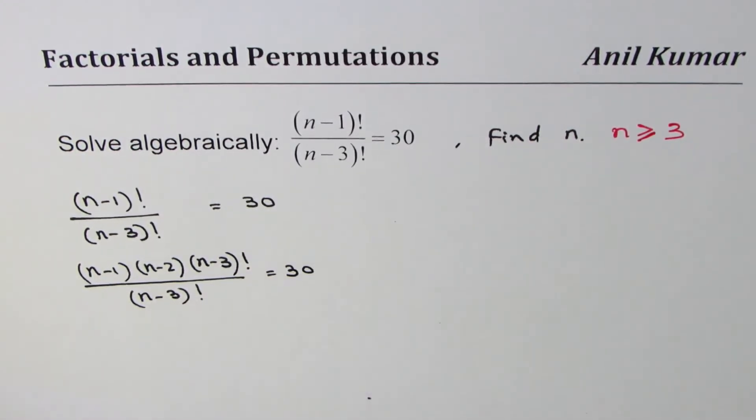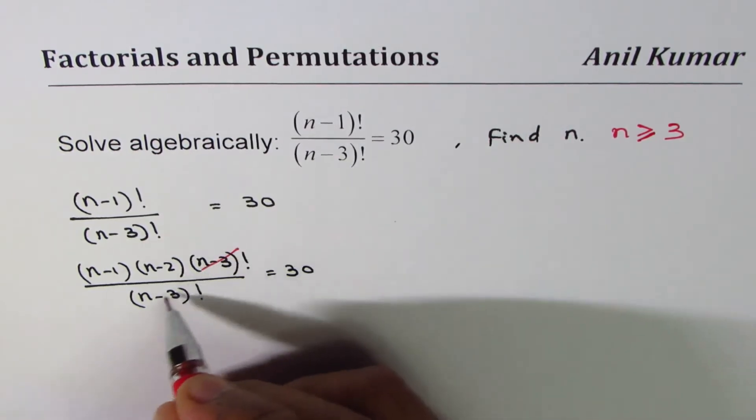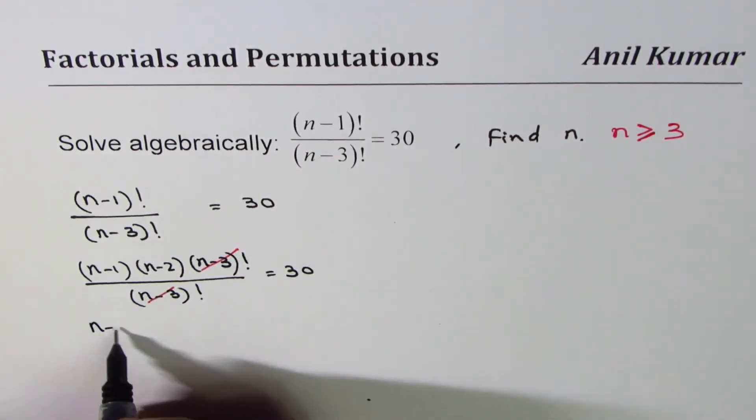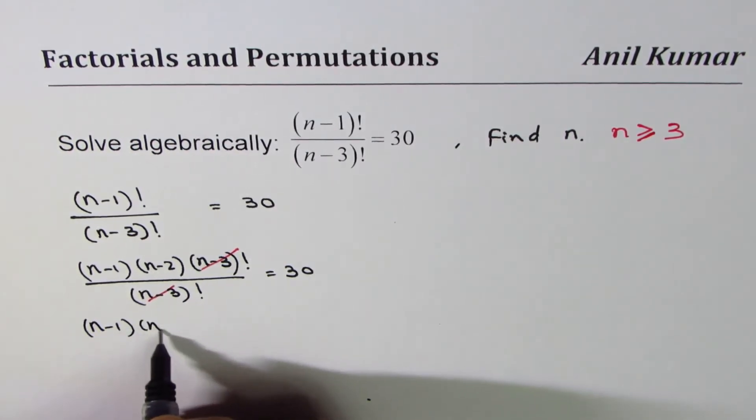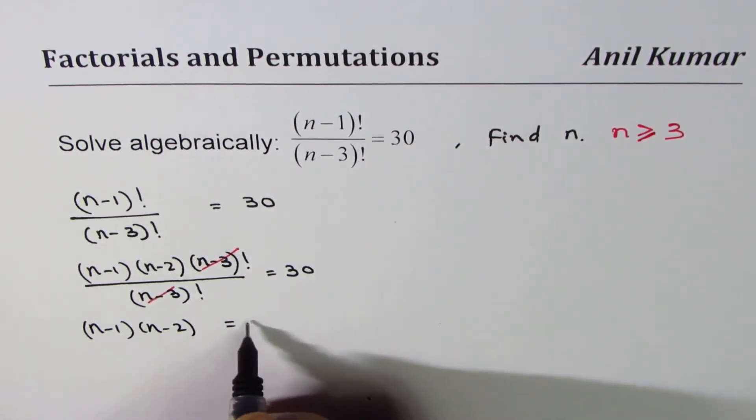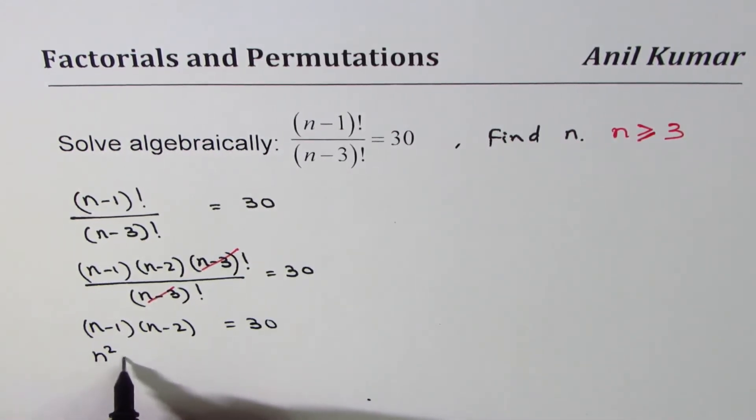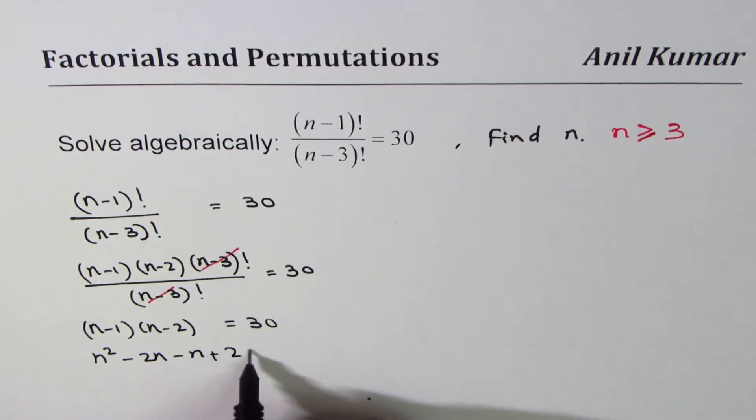So we get (n-1) times (n-2) equals 30. You can expand this: you get n² minus 2n minus n plus 2 equals 30.